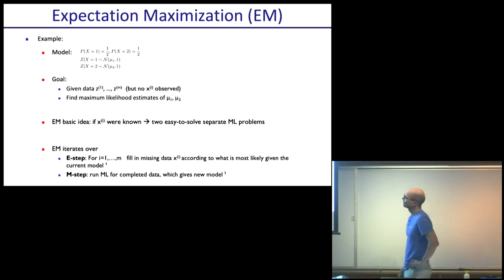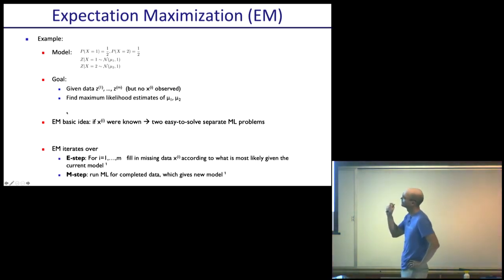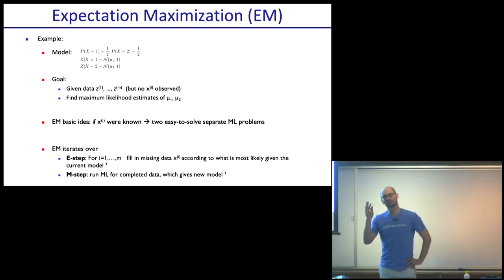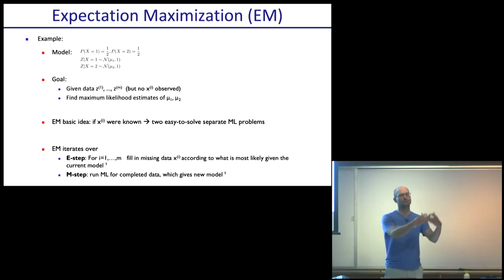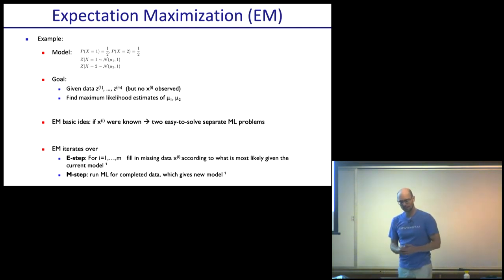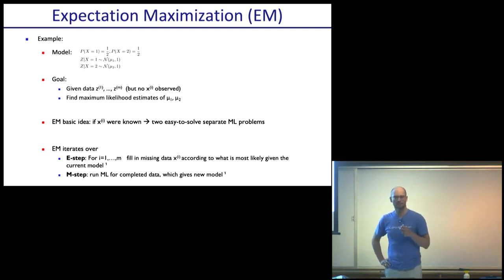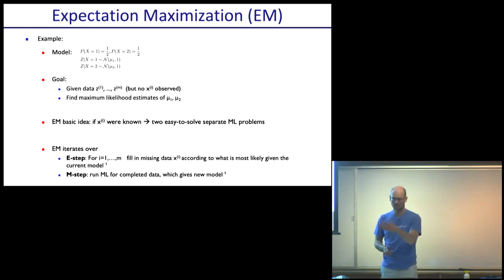Can we find maximum likelihood estimates for mu one and mu two? Let's assume the prior over X is fixed at one-half, one-half, and we just want to find the two means. The basic idea for EM — and this is the key thing to retain — is that if X_i were known for each data sample, not just Z_i but also X_i, it would be a very easy problem. You can just split the data: these are the X's where it's one, these where it's two. Then you estimate the mean of the Z's belonging to each group.